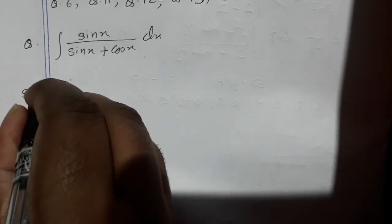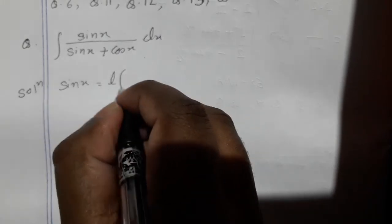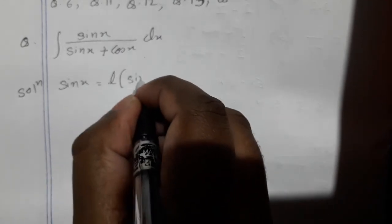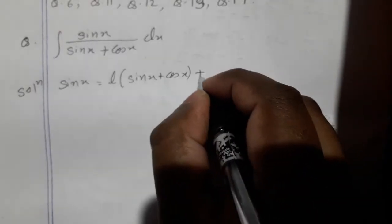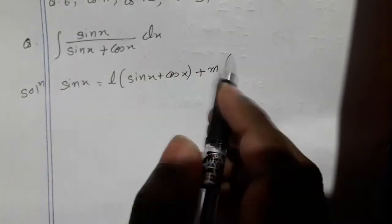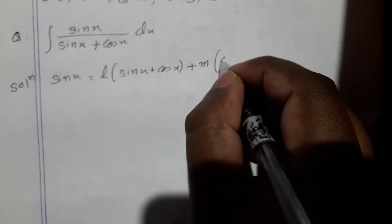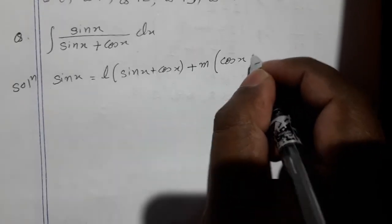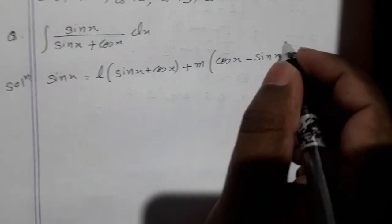So we express the numerator in the integral equal to L into the denominator plus M into the differentiation of the denominator plus N, where L, M, N are constants. We take the numerator sin(x) equal to L into (sin(x) plus cos(x)) plus M times the derivative of the denominator. Differentiating the denominator: differentiation of sin is cos(x), and differentiation of cos is minus sin(x), so we get cos(x) minus sin(x).